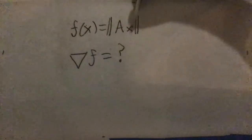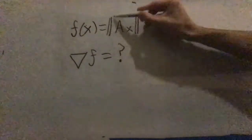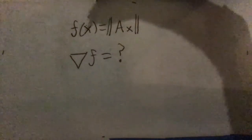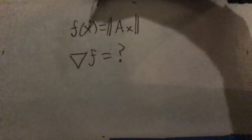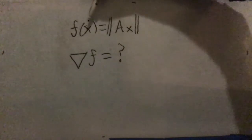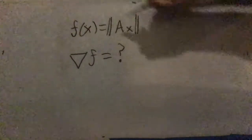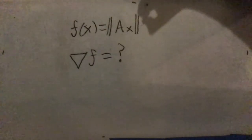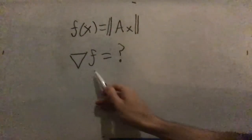Let's say we have a function f that takes in a vector x, multiplies x by some matrix A, and then returns the length of that resulting vector. f is a function that takes in a vector, so if it's an n-dimensional vector, it's a function of n variables, one variable for each component. The length of a vector is a scalar, so the output of f is a scalar. So we have a function that takes in a vector and outputs a scalar — we could ask: what is the gradient of f?